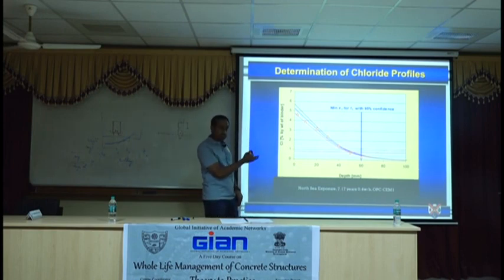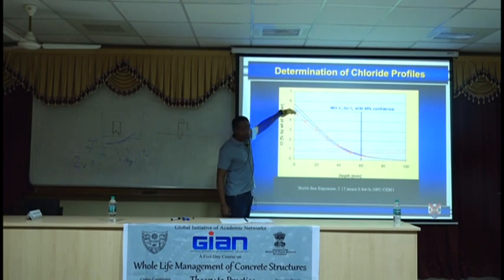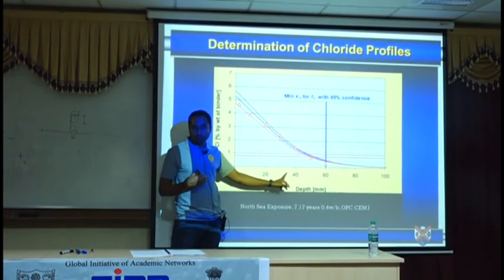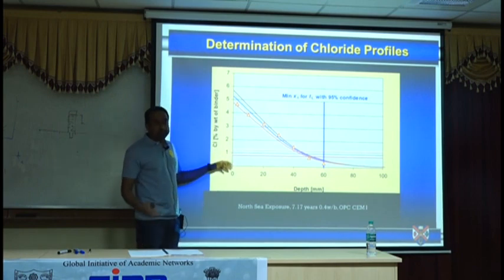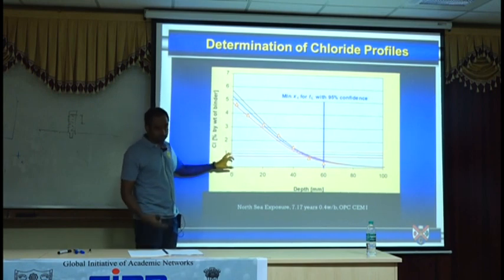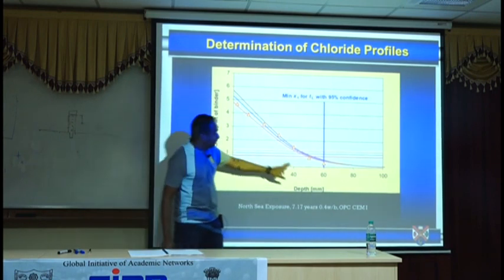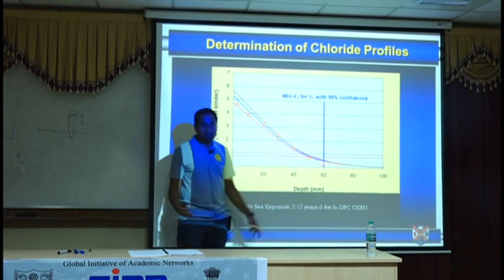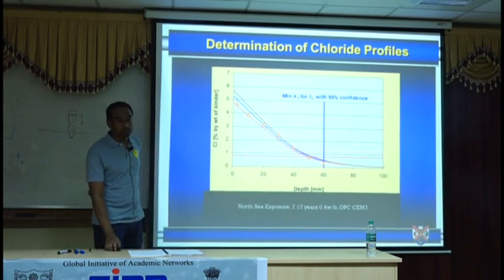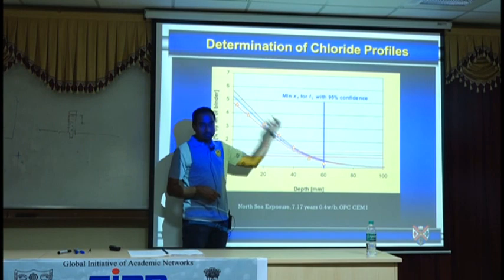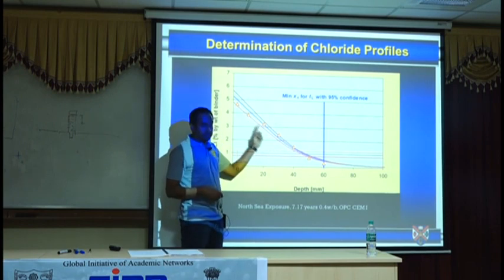This is a very tell-tale graph. There will be more chloride concentration at the surface and very little at depth. What's critical is where the steel is located. If the critical threshold concentration for corrosion is, say, 1, that means this structure will corrode if the cover is less than 52–53 mm at the time of measurement. If you use mathematics, you can move the line up and down — the three lines indicate mathematical predictions of the data points.